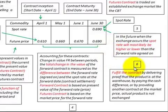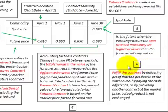To fulfill this contract, you do it either by delivery or proof that the product is in a warehouse, by paying the cash difference, or by providing another contract at the market price. The actual product is not exchanged.